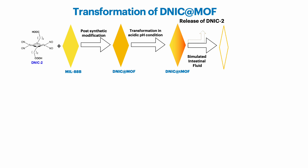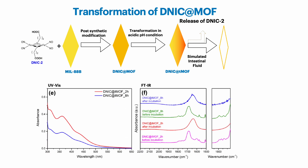Further, this transformed DNIC at MOF was incubated in simulated intestinal fluid. Incubation of DNIC at MOF in simulated intestinal fluid shows complete release of DNIC. The microrod shows 40% production efficiency in simulated gastric fluid, and the data shows the release of DNIC at different time points.